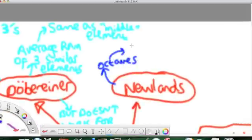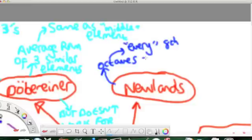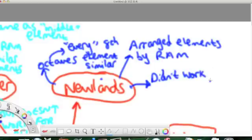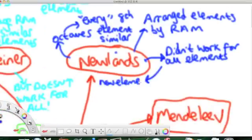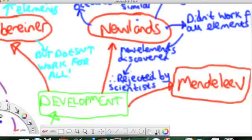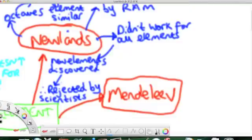Now, Newlands identified octaves, which were groups of eight elements, and every eighth element had similar properties. He arranged this table by relative atomic mass. And it was good, but it didn't work for all elements. But more embarrassingly, new elements were being discovered, and kind of skewing his table and making it incorrect. So, he was rejected by scientists as well.